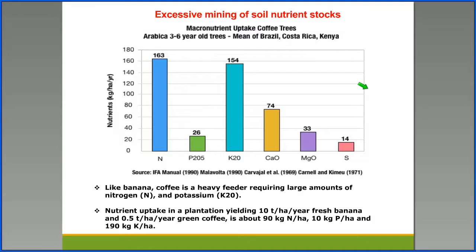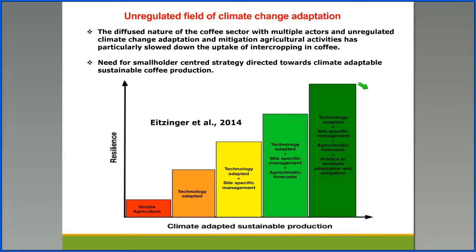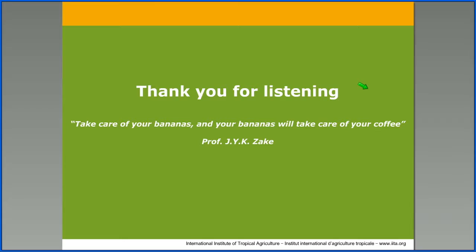In a plantation yielding 10 tons per year of fresh bananas, for example, coffee requires about 90 kilograms of nitrogen, 10 kilograms of phosphorus, and 190 kilograms of potassium per hectare. There is also the unregulated field of climate change, with a diffuse nature of the coffee sector involving multiple actors and unregulated climate change adaptation, which particularly slows down the uptake of intercropping in coffee. There is also a need for smallholder-centered strategies directed towards climate-adaptable, sustainable coffee production.